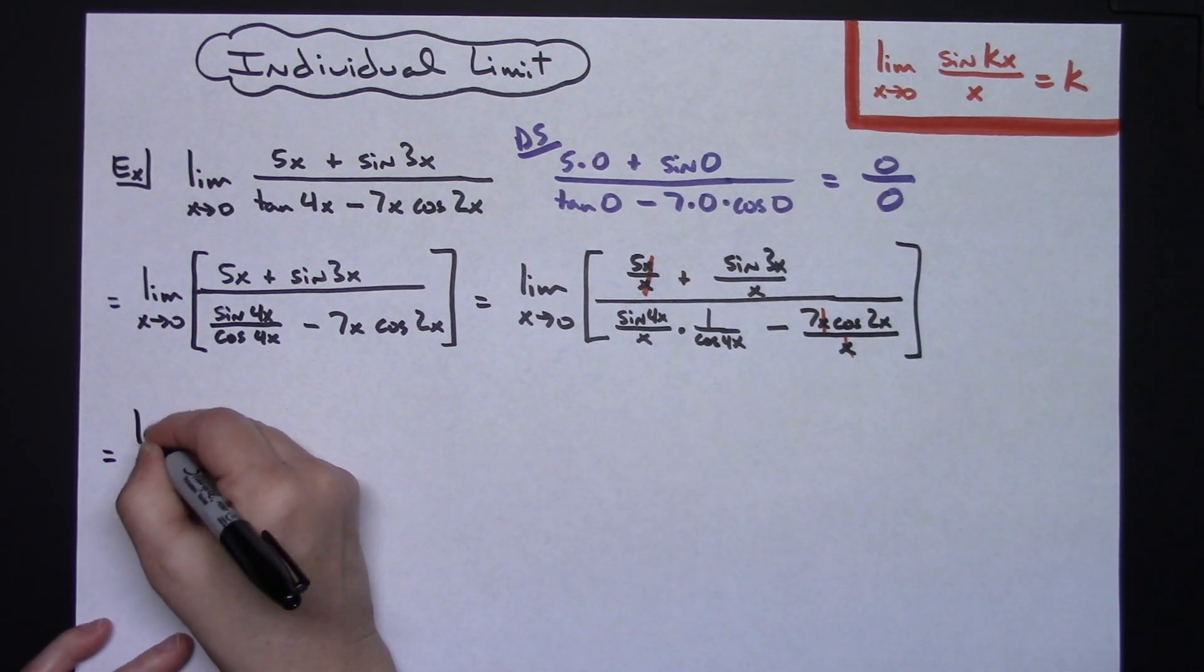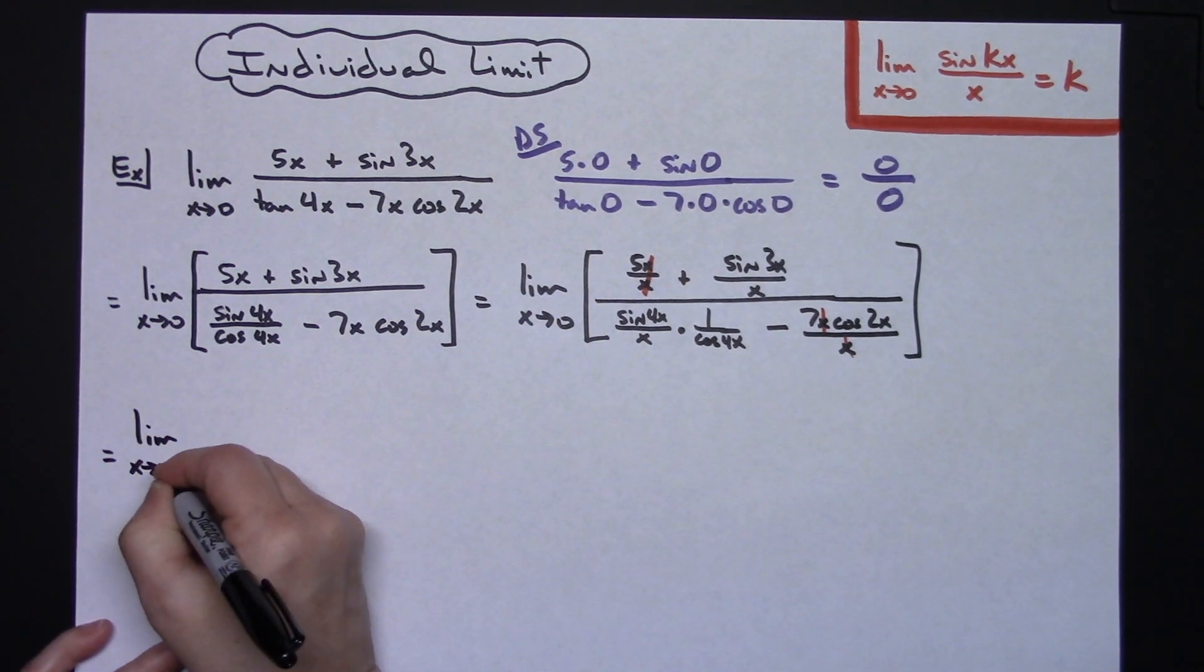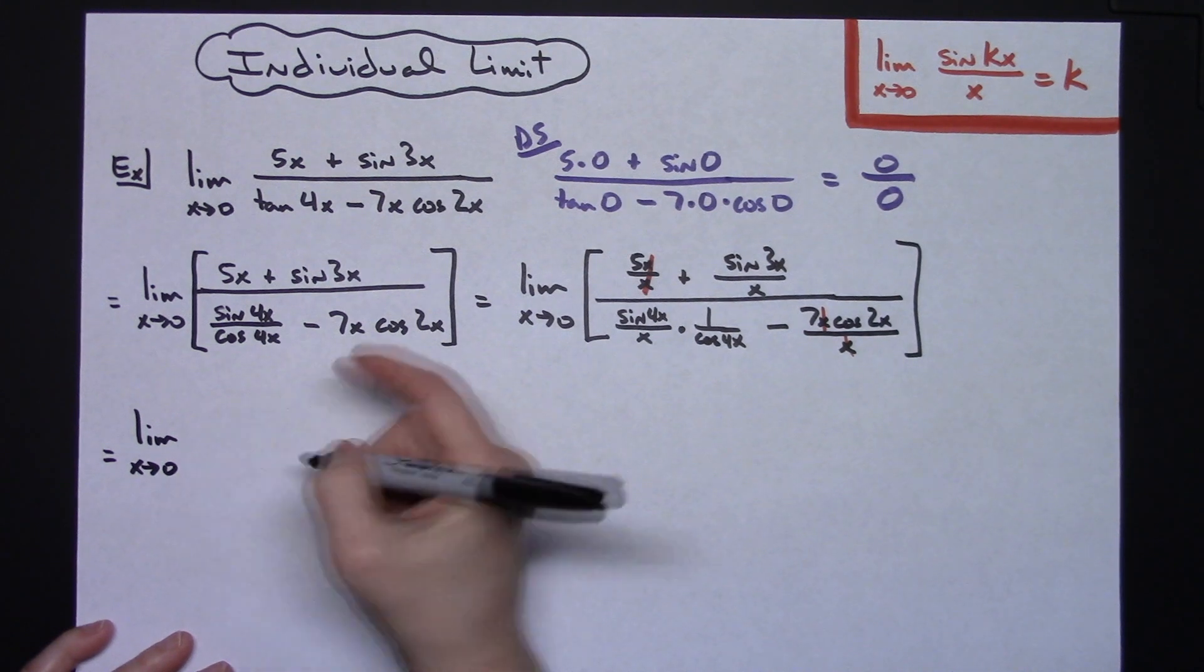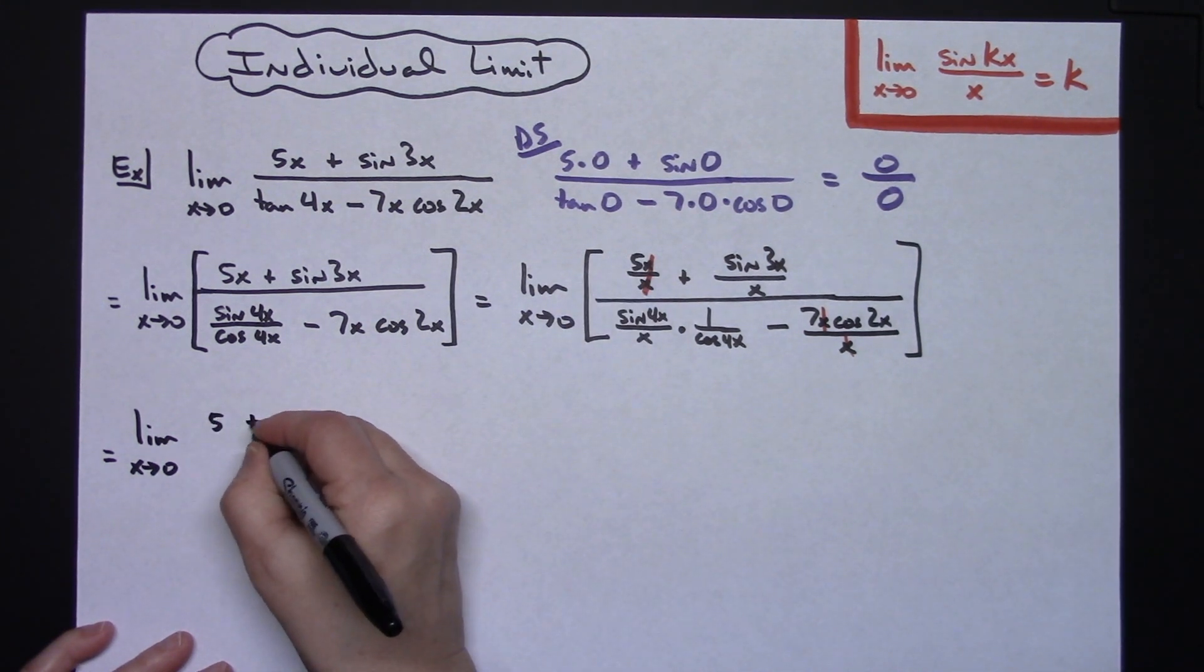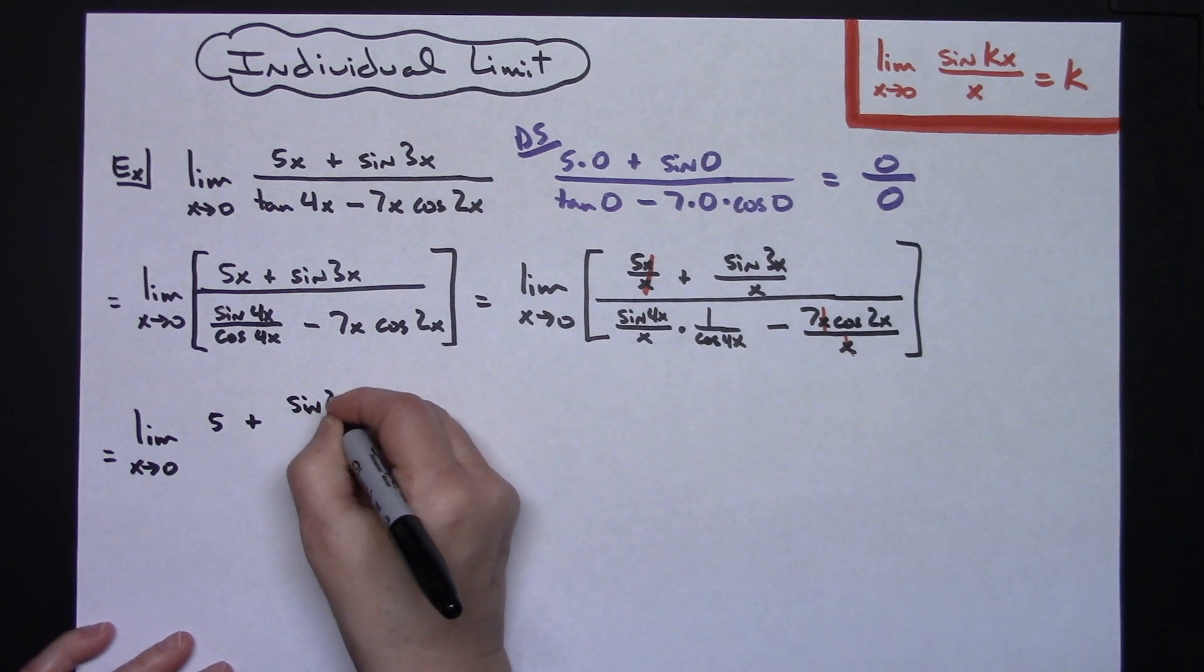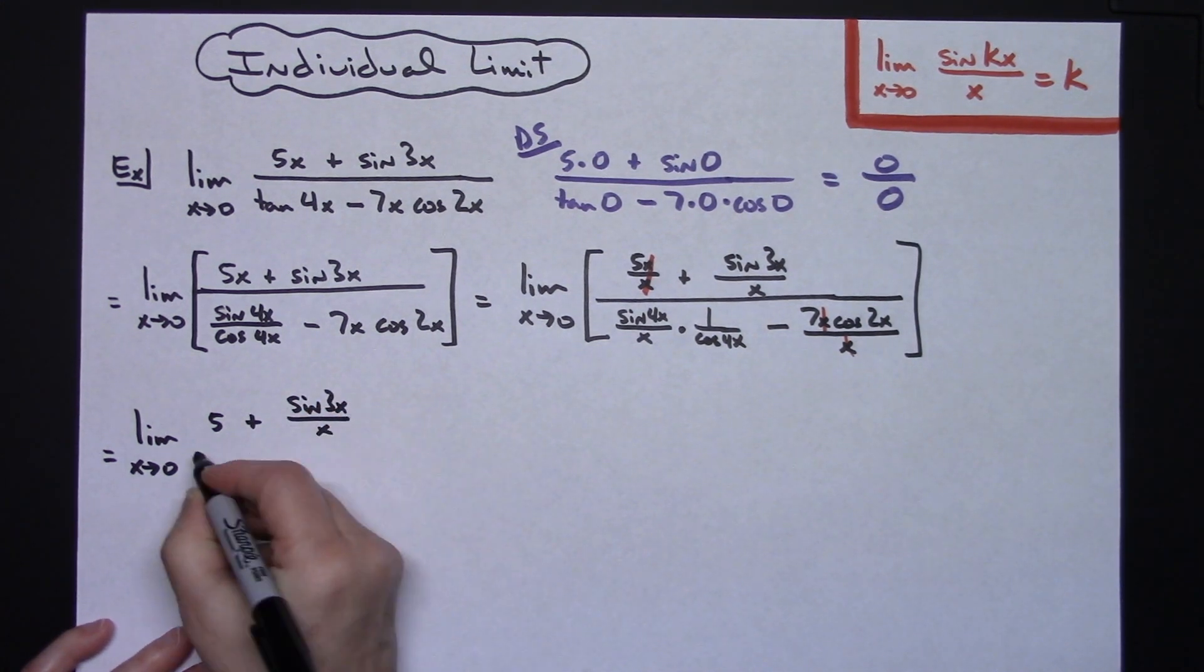So I'm going to have the limit as x approaches 0. In that numerator right there I'm going to have a 5 plus - we're going to leave that sine 3x over x right there in the numerator.